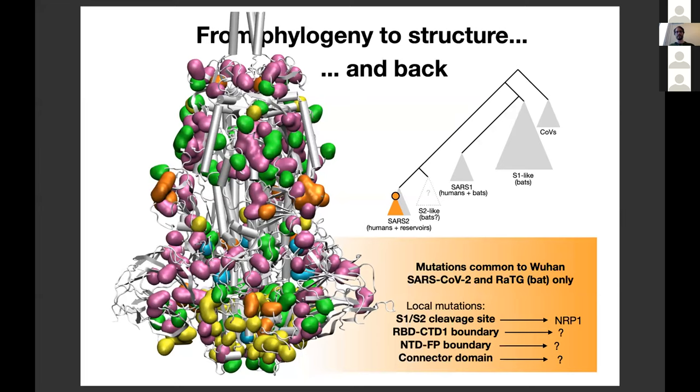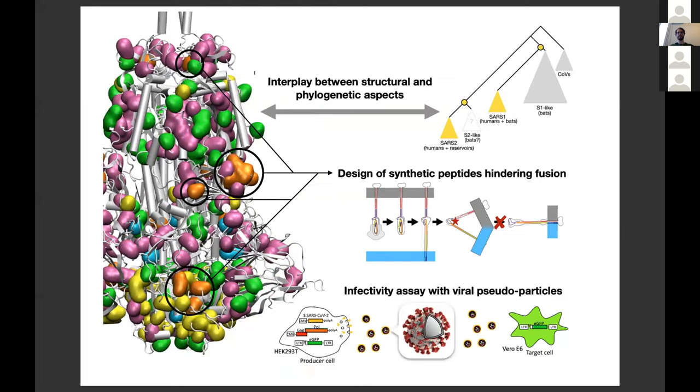Summarizing, the coevolution analysis that we have done and will continue doing sheds some light on the interplay between structural and phylogenetic aspects of SARS-CoV-2. It will also help us find some superficial regions to design our synthetic peptides which could hinder the fusion of SARS-CoV-2, and then will be tested by the infectivity assay by the CIRI. With this I thank you for your attention and again thank you to the organizers.